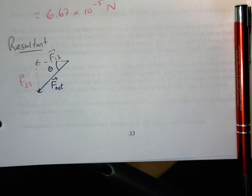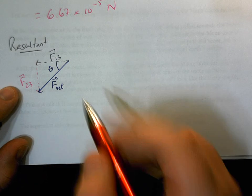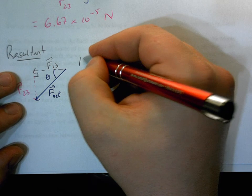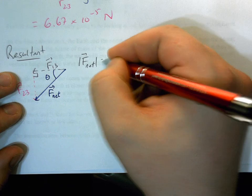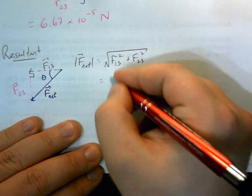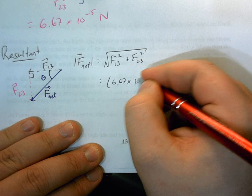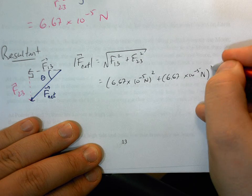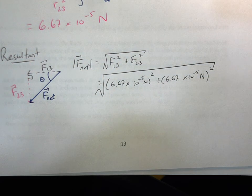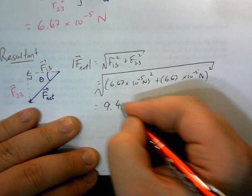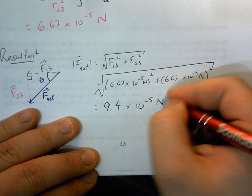Well, to get the magnitude, we're still doing Pythagorean theorem, because F1,3 and F2,3 make a right triangle. We can certainly do this Pythagorean theorem. So the net force magnitude is just going to be F1,3 squared plus F2,3 squared. So we've found these two values already. And let's see what we got here. So we are going to get about 9.4 times 10 to the minus 5 newtons.